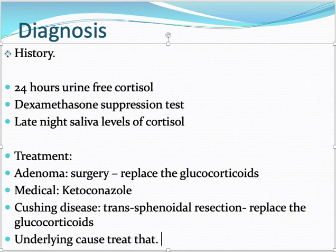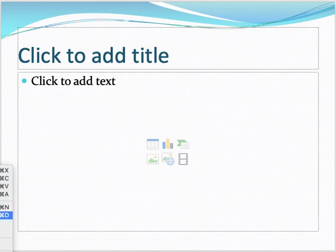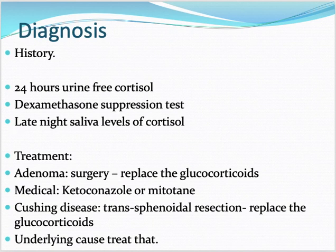Another drug, mitotane, can also be given — it decreases cortisol levels in the body. For ectopic causes such as small cell lung carcinoma, that primary tumor should be resected. If resection is not possible, ketoconazole or mitotane can be given to manage cortisol excess. This concludes the topics of pheochromocytoma and Cushing syndrome.